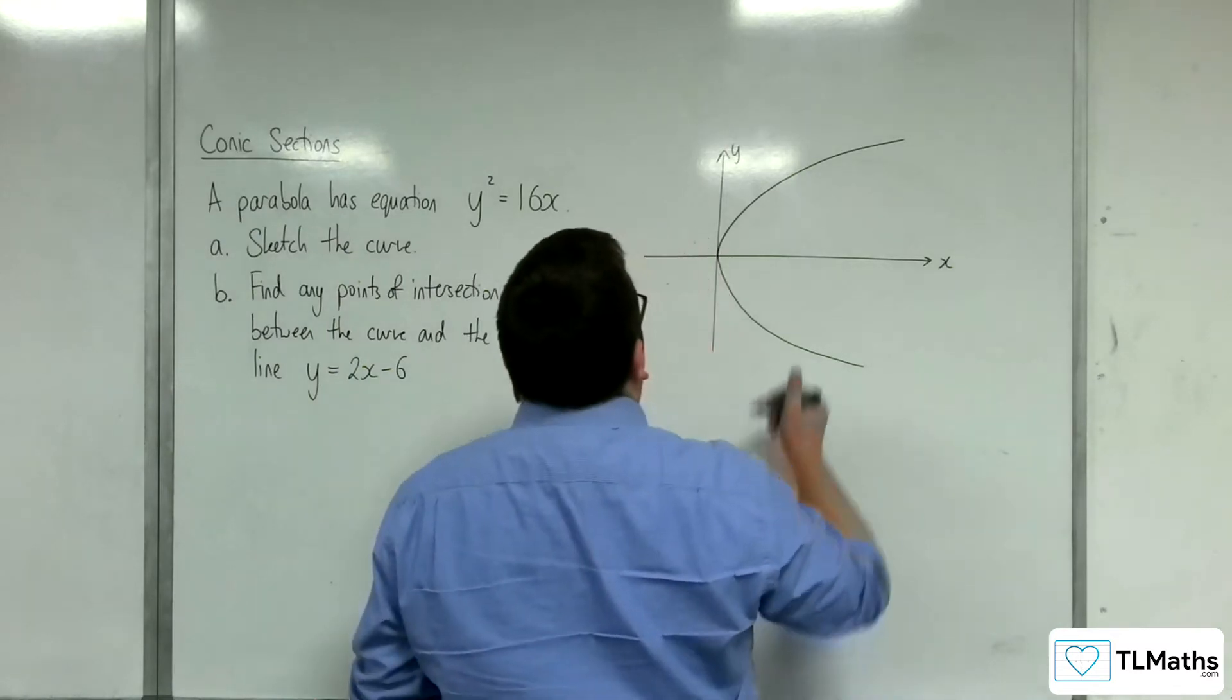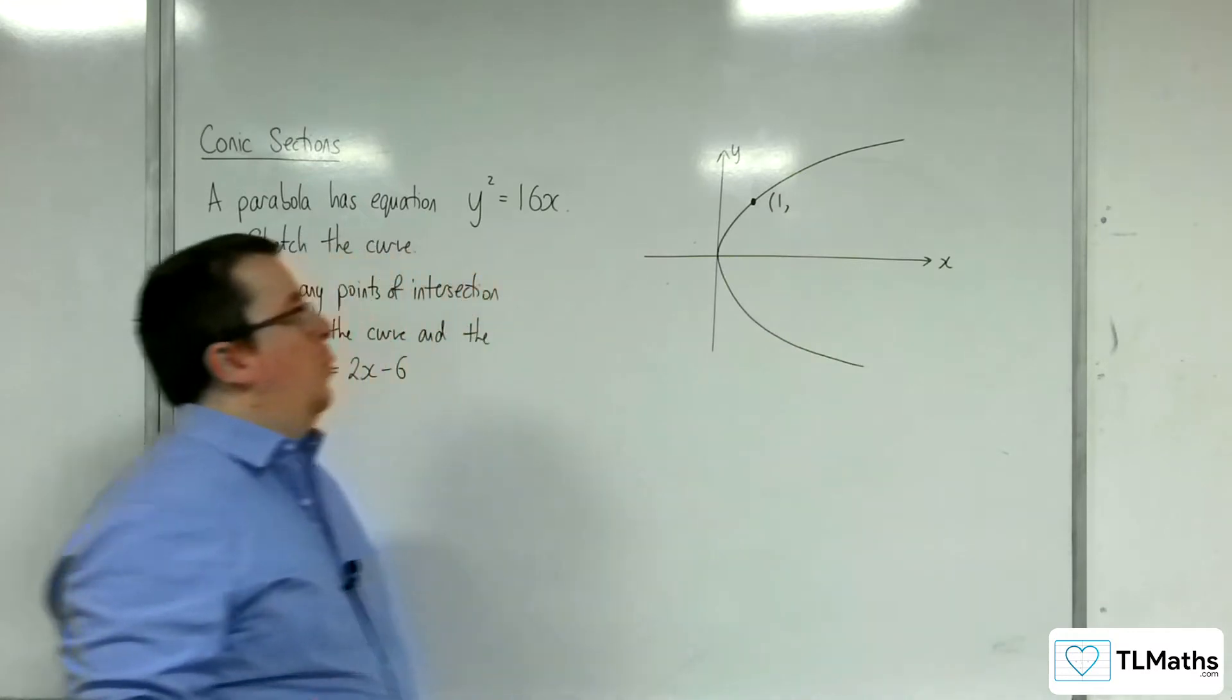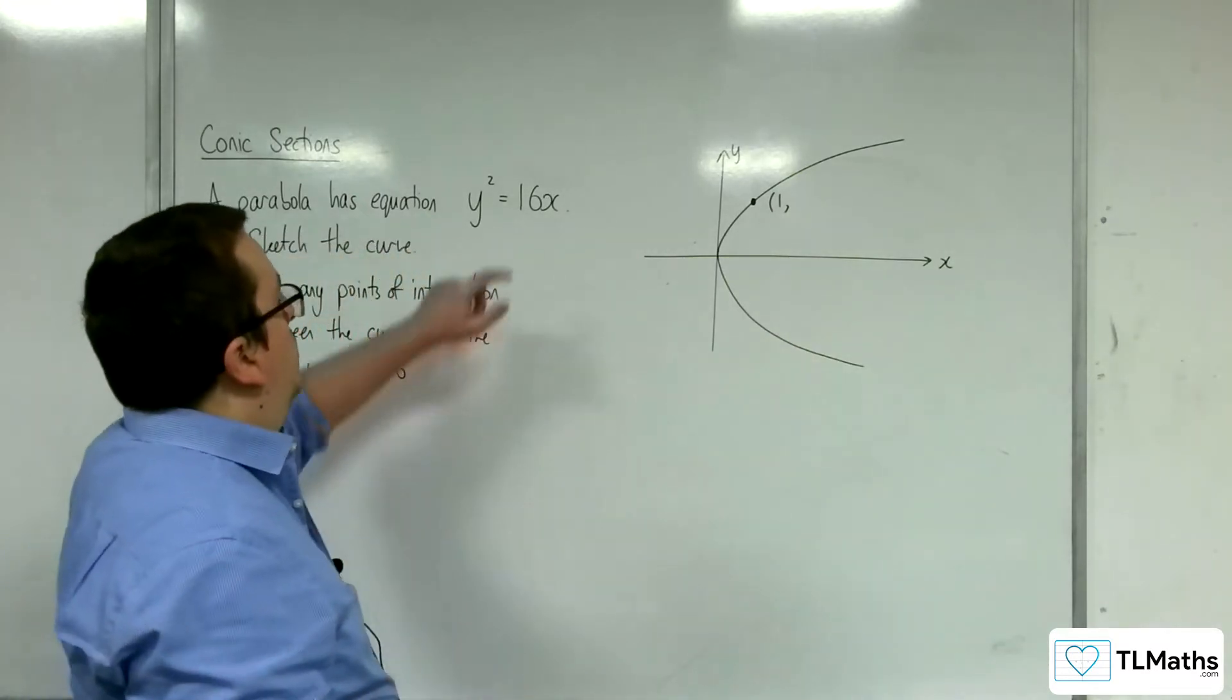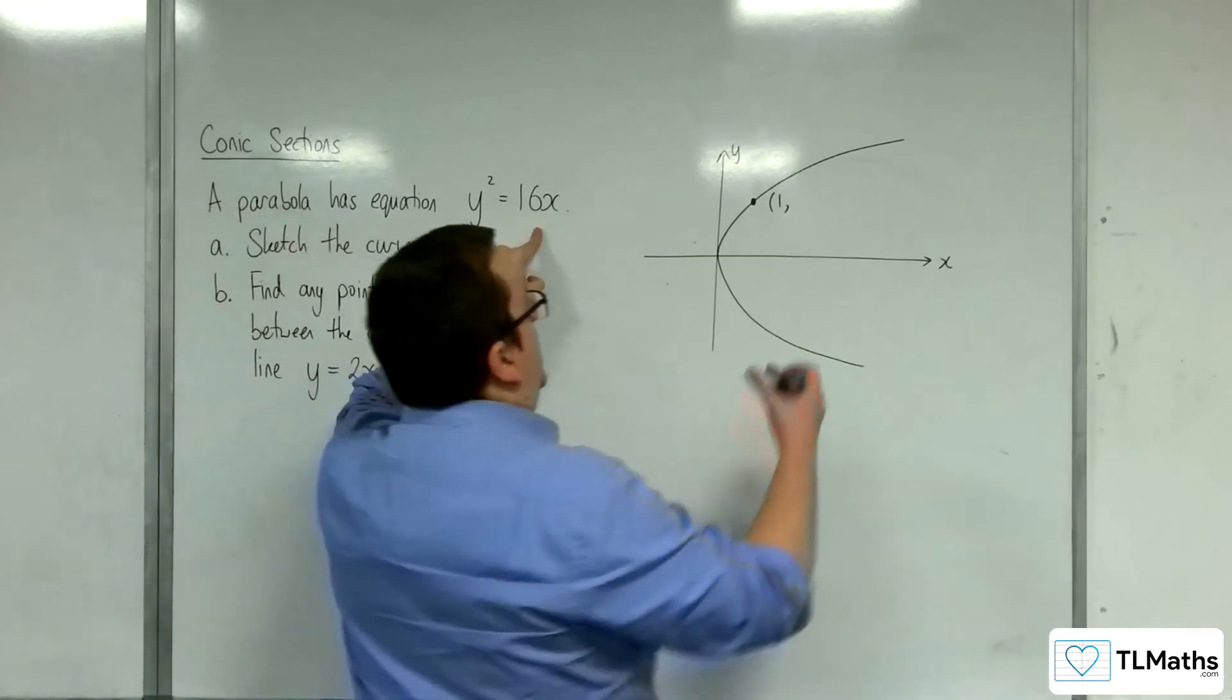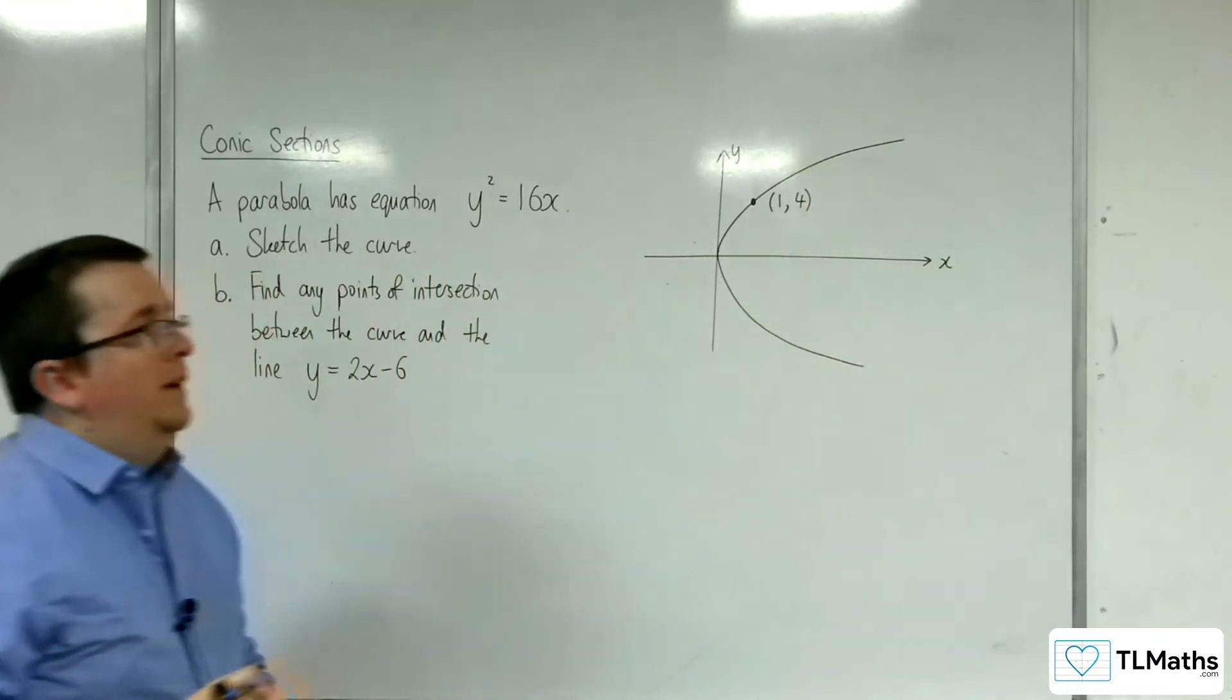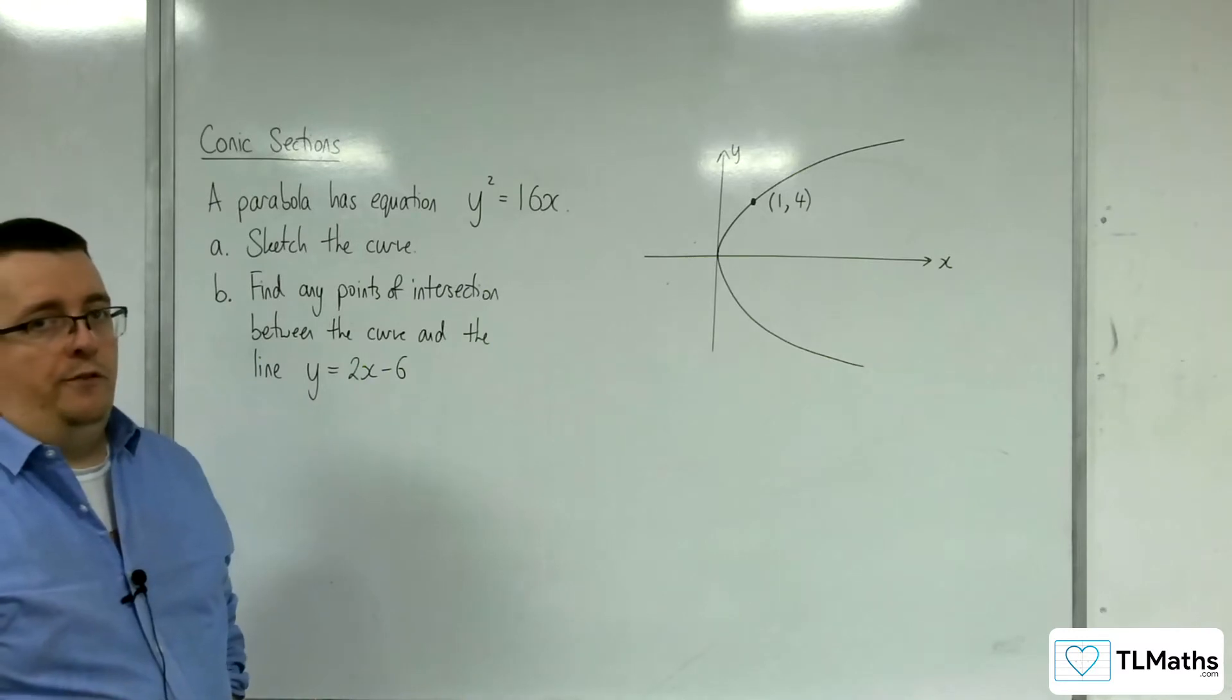So let's say I choose this point here, which has x coordinate 1. What would be the y coordinate? Well, if x is 1, we'd have 16, so y squared is 16, so y would have to be 4. So this is the point 1, 4. And that kind of sets it apart from any other graph.